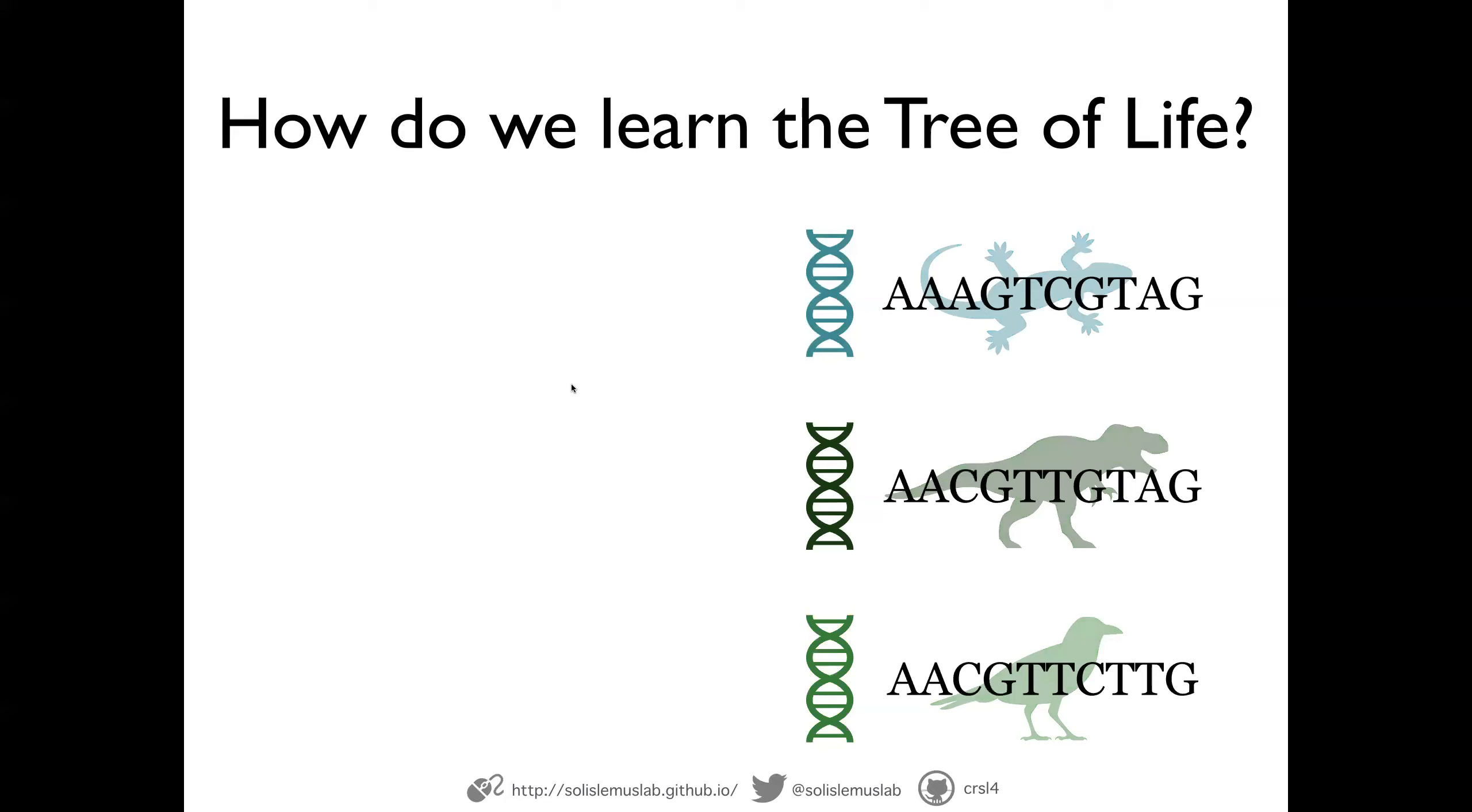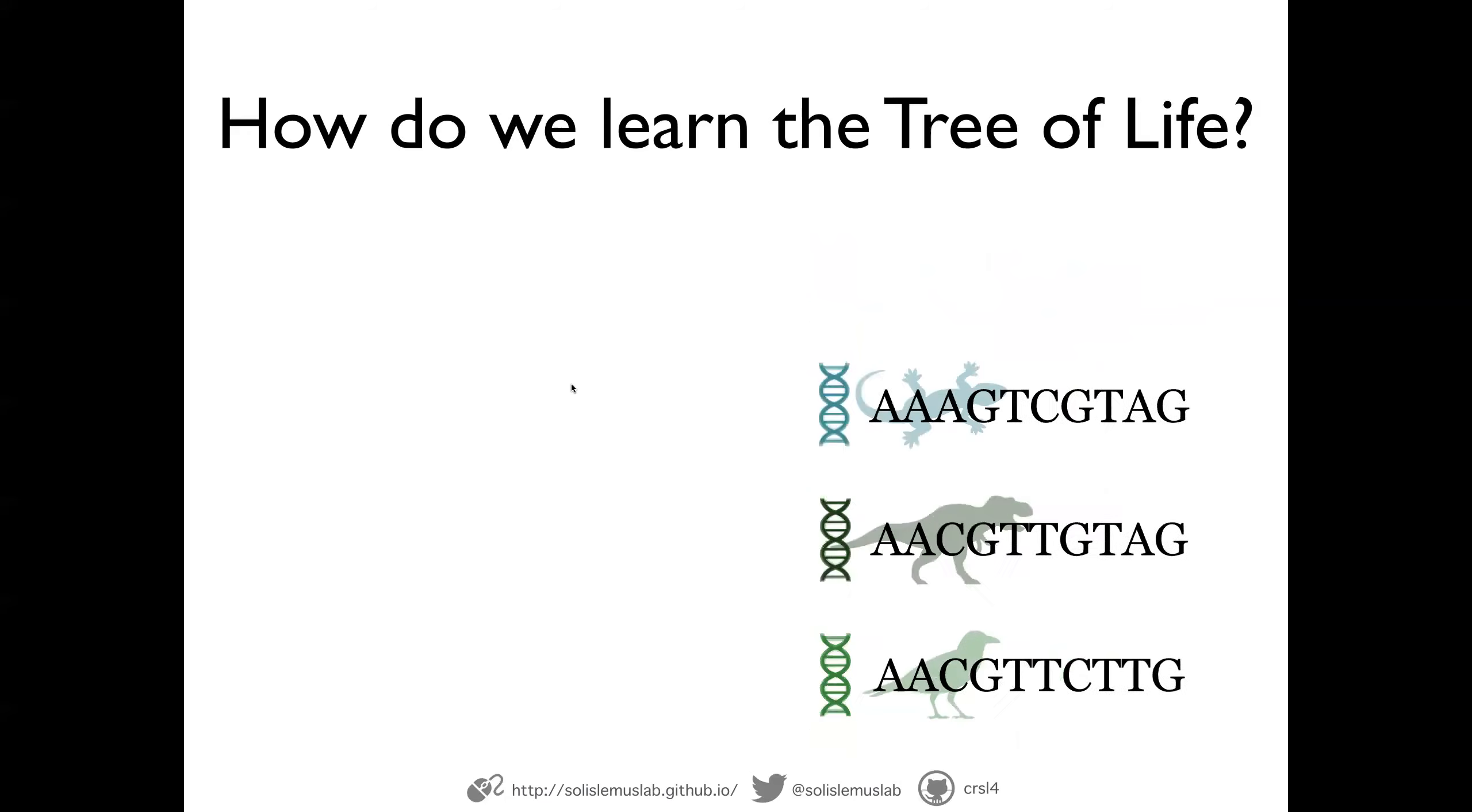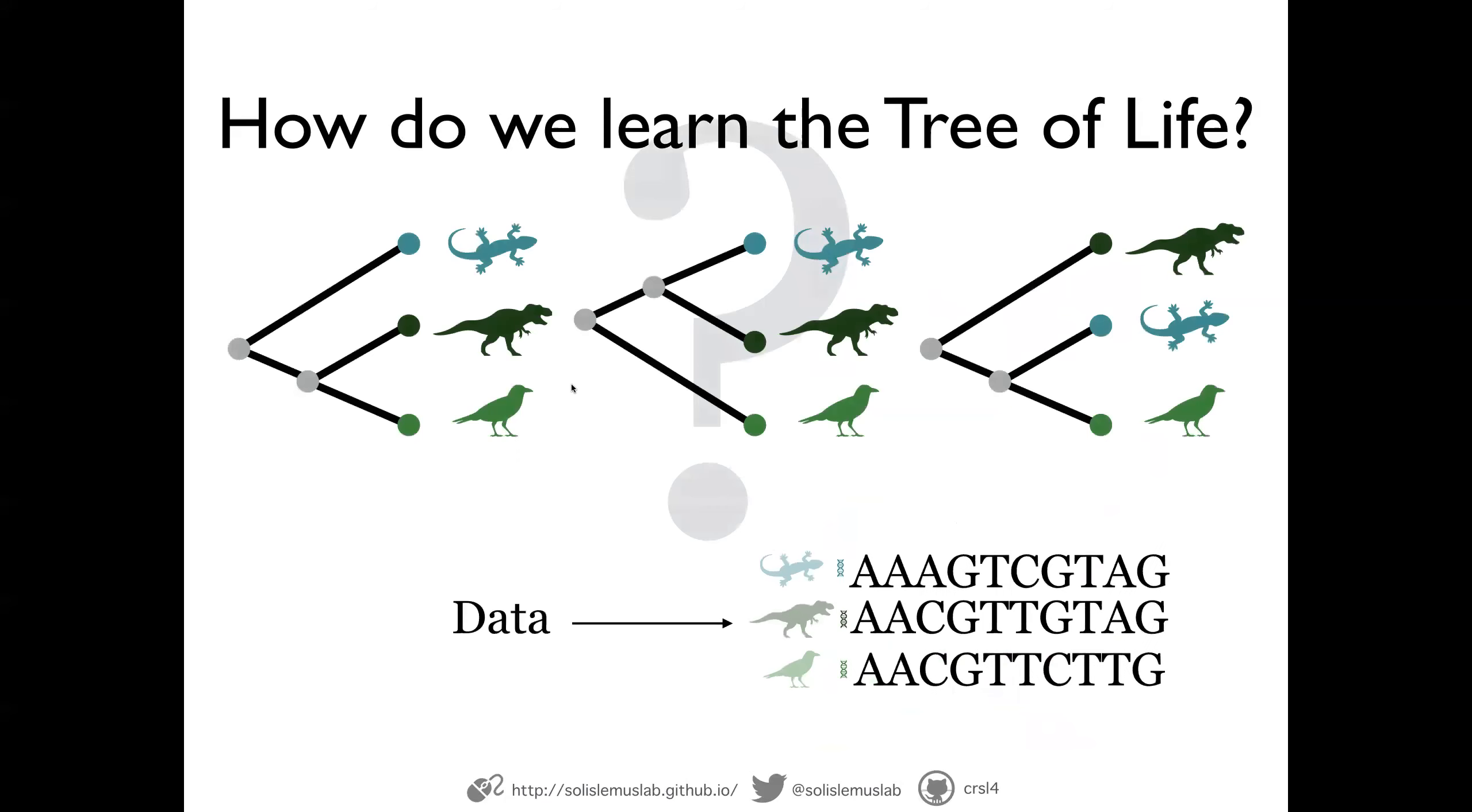And then from the sequences that represent simply their strands of nucleotides, ACGT. Here I'm just showing a very short, I think it has like 10 nucleotides, but of course in real life we collect much longer sequences. With these sequences, this is the data that we want to use to identify which is the tree that agrees with the data that we have.